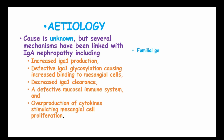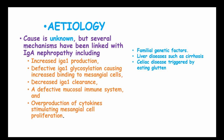Also, familial genetic factors, liver disease such as cirrhosis, celiac disease which is triggered by eating gluten, and dermatitis herpetiformis with infections such as HIV and AIDS have been linked with IgA nephropathy.